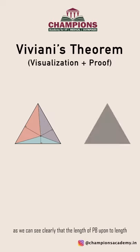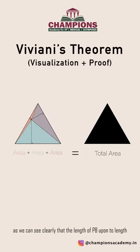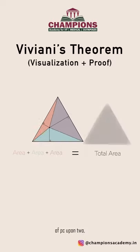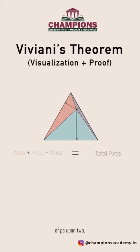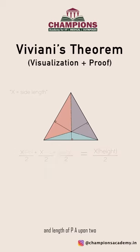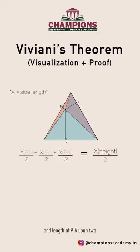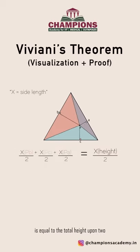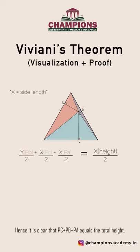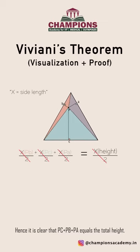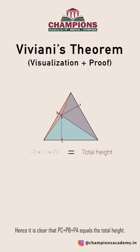As we can see clearly, the length of PB upon 2, length of PC upon 2, and length of PA upon 2 is equal to the total height upon 2. Hence, it is clear that PC plus PB plus PA equals the total height.